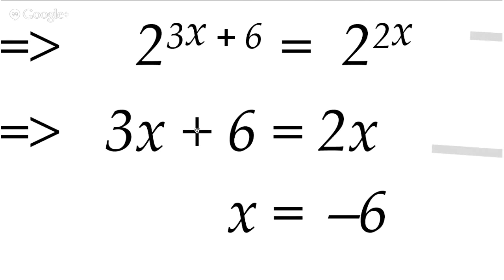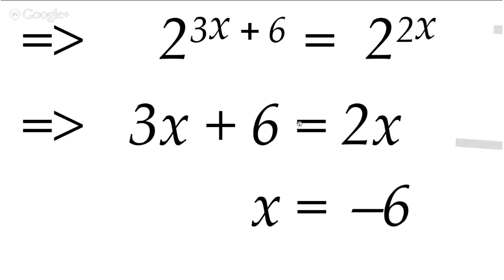Then it's a simple case of rearranging the equation to work out what x is. Bring the two x over to the other side and it becomes minus two x. Bring the plus six over and it becomes minus six. On this side you have three x minus two x which is x, and it equals minus six. That's all there is to it.